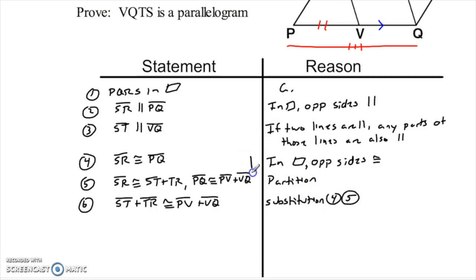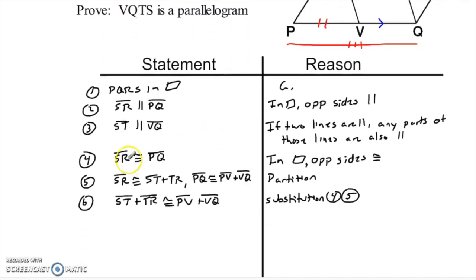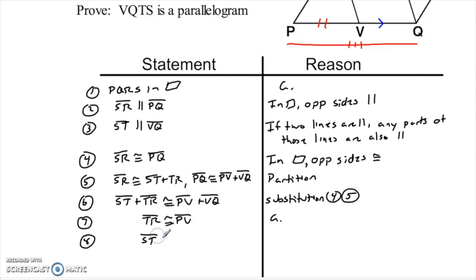Now I'm going to bring that other given into the mix. They told me that TR is congruent to PV. So if I know TR is congruent to PV, I can go ahead and do some subtraction — take away TR, take away PV — and what I'm left with is ST congruent to VQ. That is subtraction with those steps.